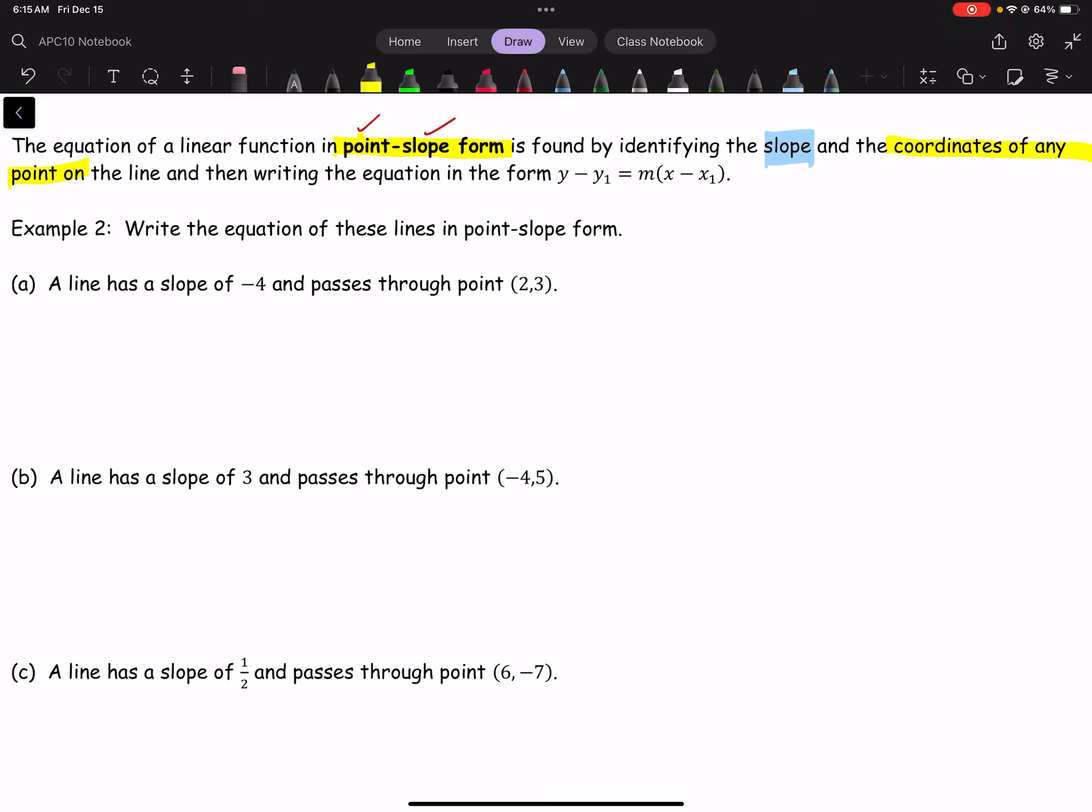So here, my slope equals negative 4. My point, you can call it x1, y1, is going to be point 2, 3.